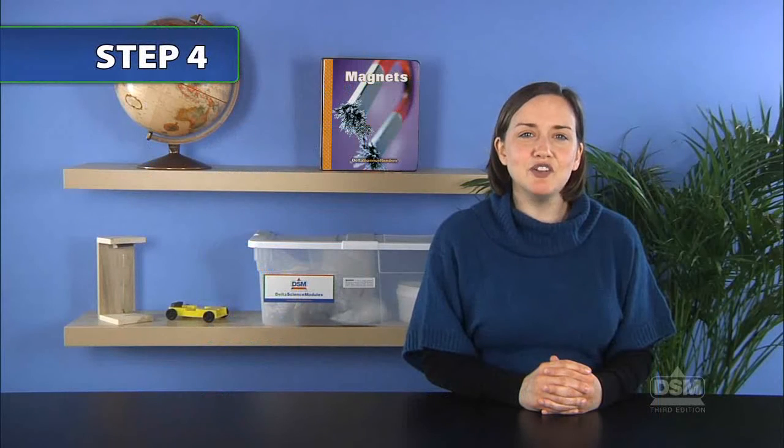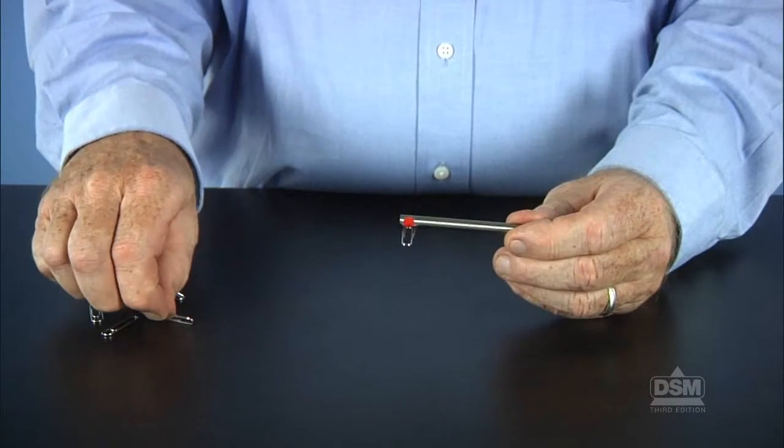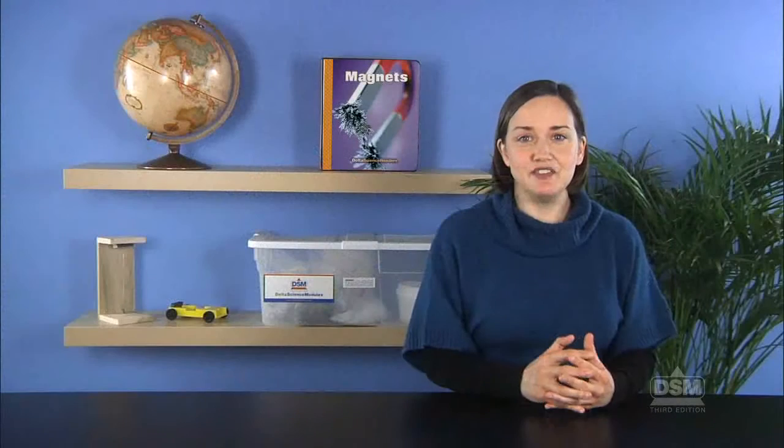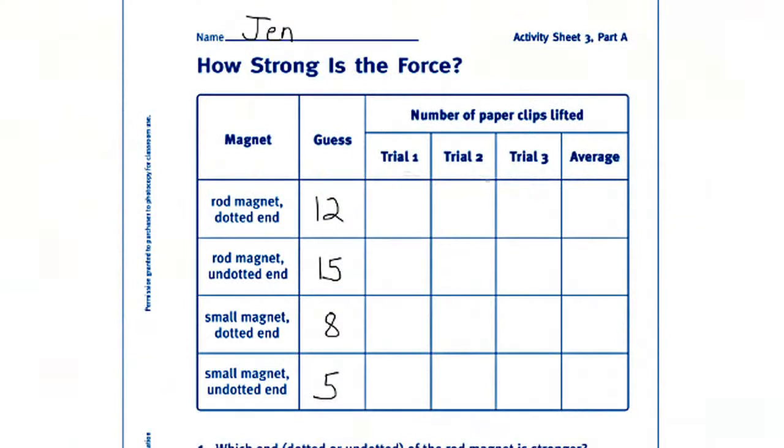Have them record their guesses in Part A of their Activity Sheets. Next, distribute 25 paperclips to each team. Have them pick up one by one, end to end, as many paperclips as possible by the dotted end of the rod magnet. Have them repeat this step three times and record their results on Activity Sheet 3 Part A.